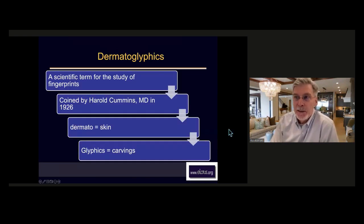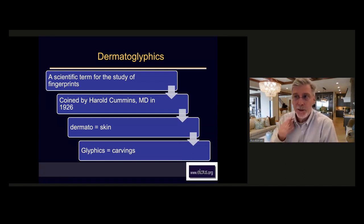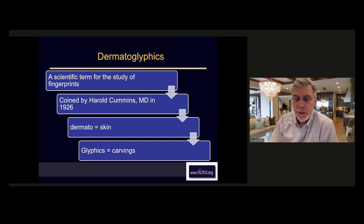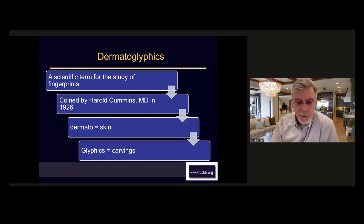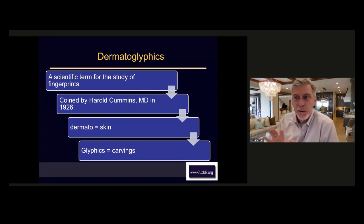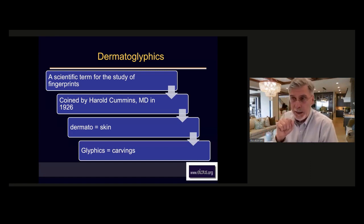So dermatoglyphics is a science of reading our fingerprints — it's a scientific study. They've probably done more scientific research on fingerprint patterns than any other part of palmistry. Everything I've taught you so far — all the personality stuff — has actually been researched in neuroscience. How the shapes of our hand, the size of our fingers, everything is reflected in our personality and behavioral traits. This is actually a science now.